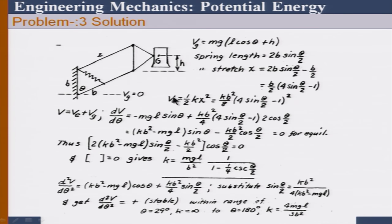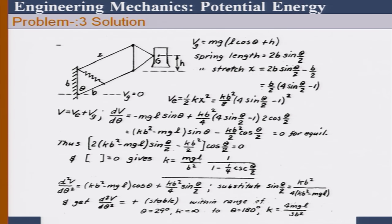I will show you the solution — please look at it and rethink it carefully. The mass center is at a fixed distance h from the pin, so the potential energy of the weight is mg(L cosθ + h). The spring length at configuration theta is given by 2B sin(θ/2) from the geometry. The stretching x is therefore 2B sin(θ/2) minus the original length B/2. With the stretching known, the potential energy is completely set up as spring energy plus gravitational energy.